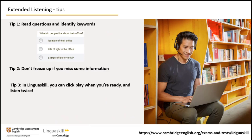In the example here, you need to listen for preference — that is, what the people like. You may hear information about all three options, but only one of the options will be something that people like — in other words, the correct answer. Test designers often paraphrase the words you hear in the audio when writing the test questions and options, so you may not hear the same words that you read.